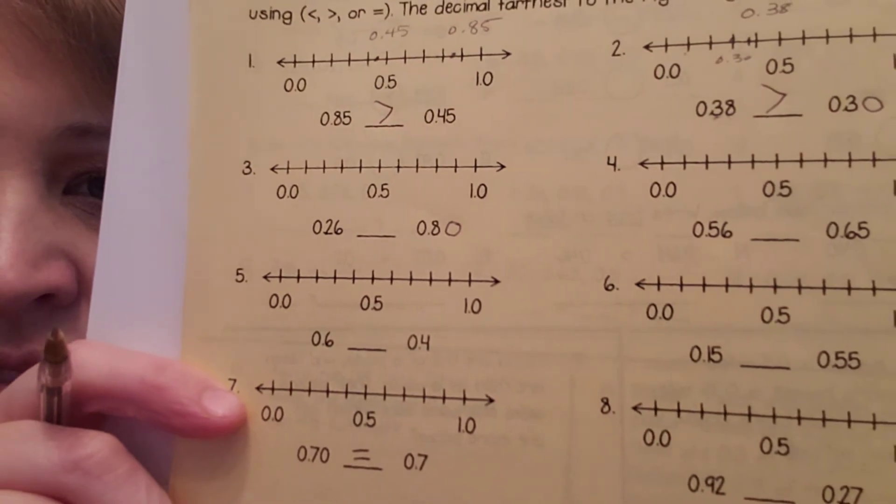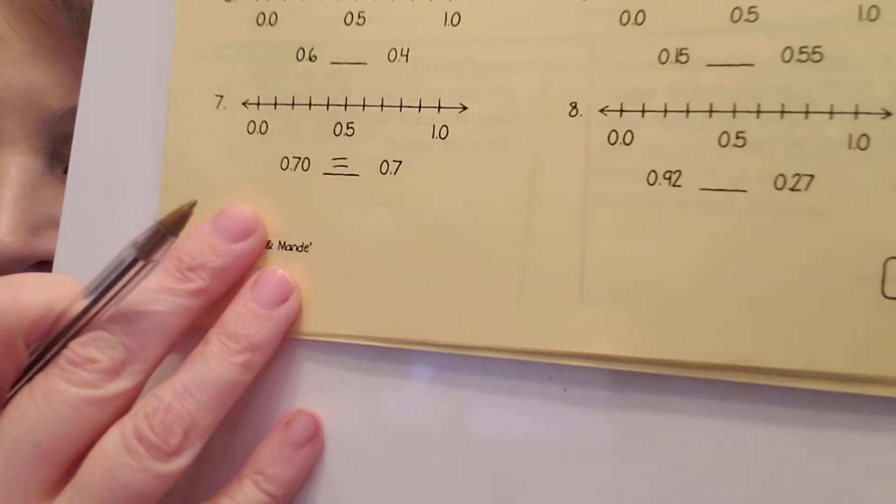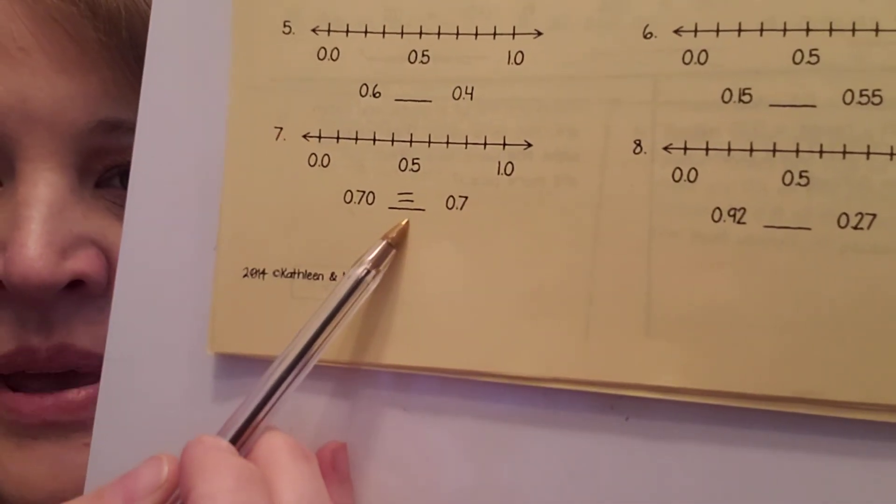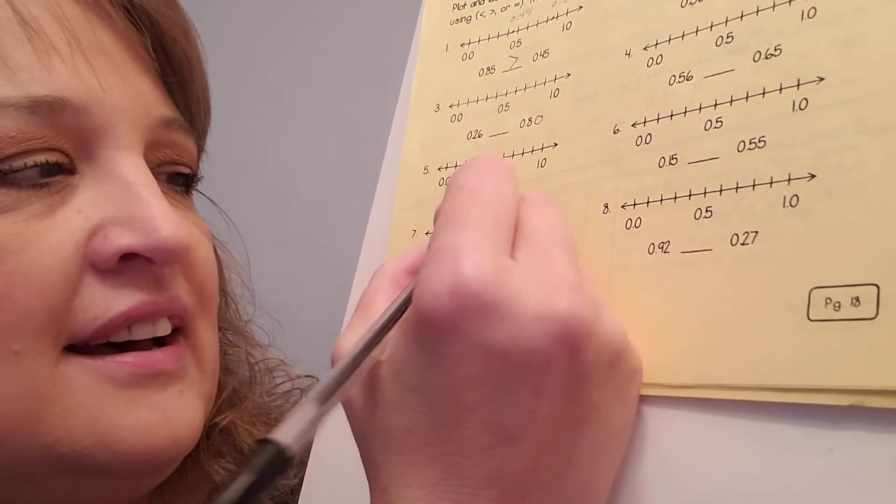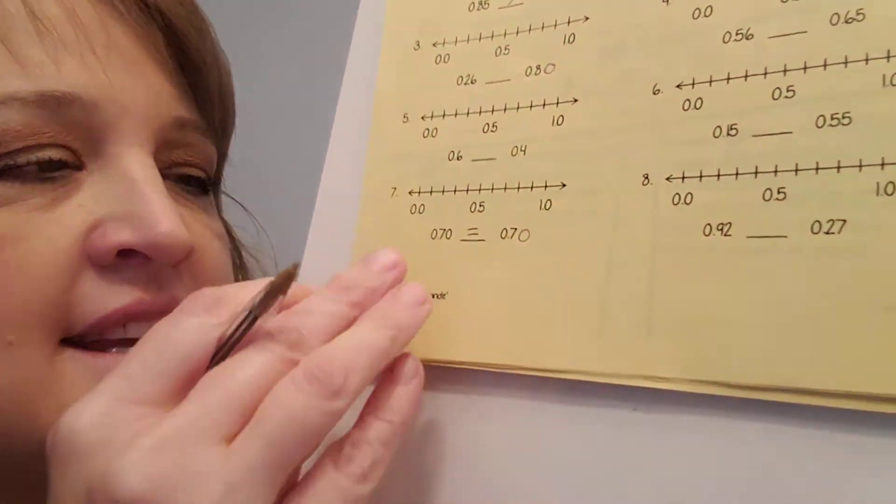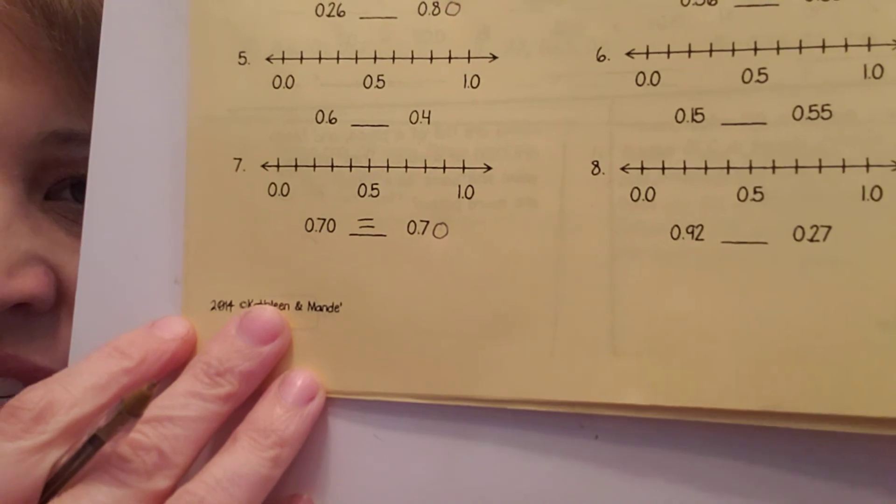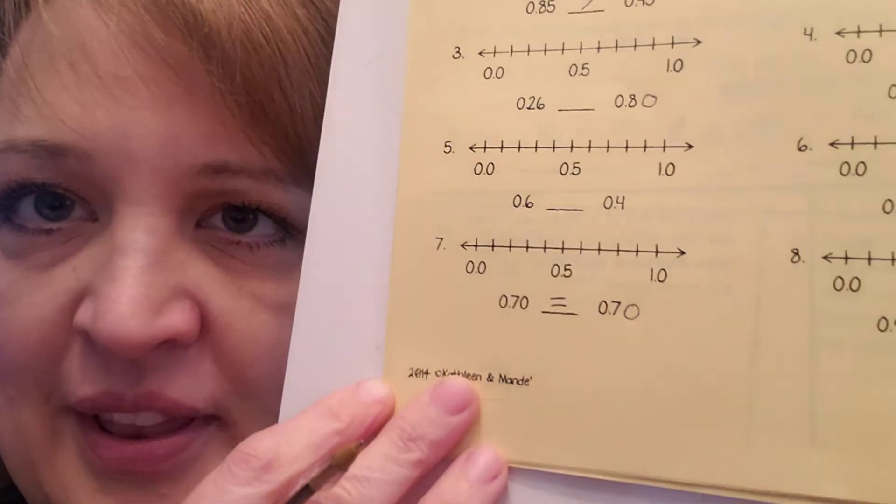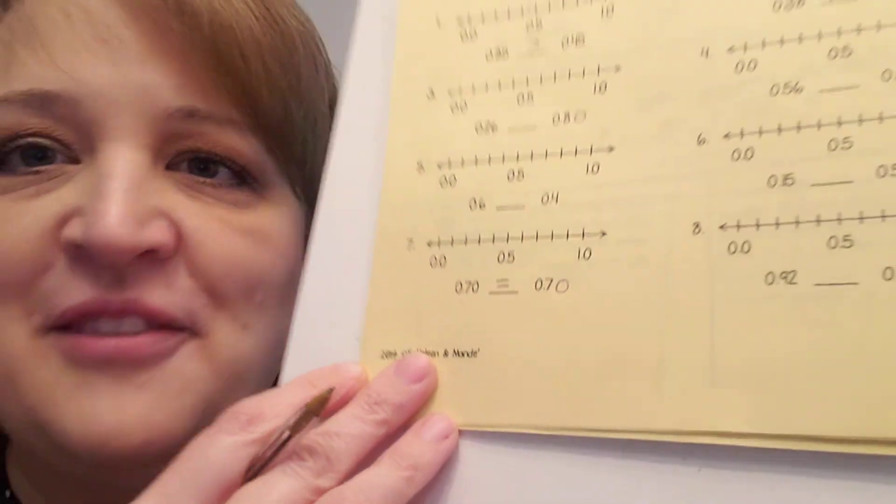All right, my friends. Oh, look. Look at this. 70 hundredths equals 70 hundredths. Just put it on the number line. All right, my friends. Today's assignment, page 17 and 18. You've got this. Bye.